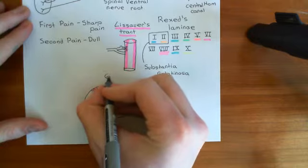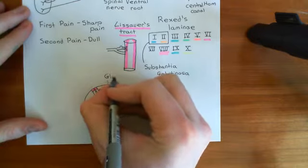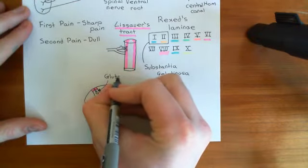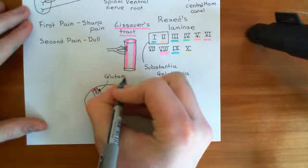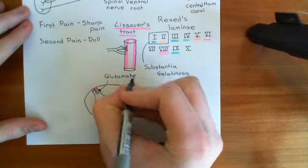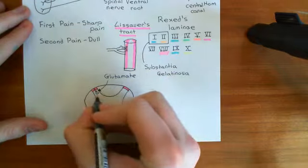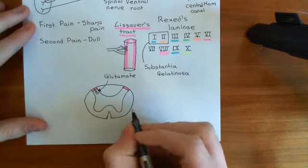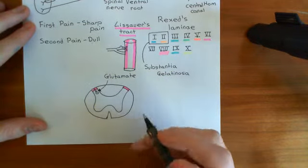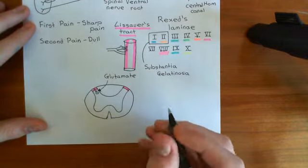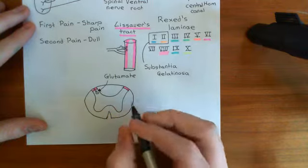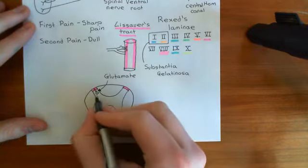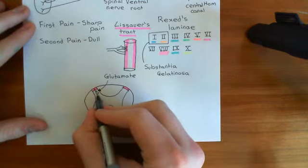For now, know that this is a glutamatergic synapse. The sensory neuron is releasing glutamate onto the next neuron along. Glutamate is generally an excitatory neurotransmitter, so it will excite the next neuron along.